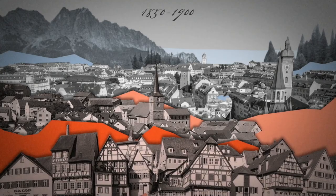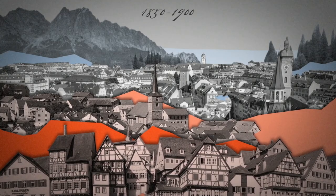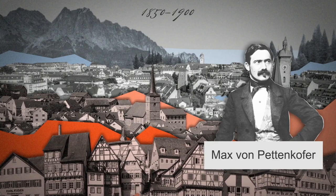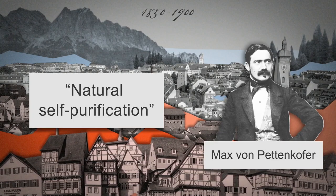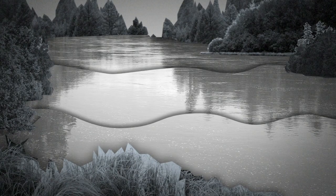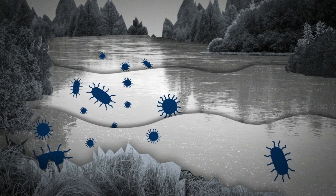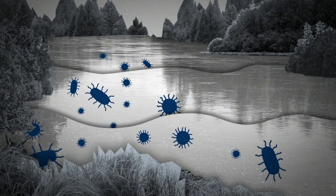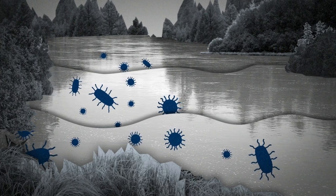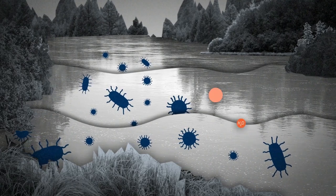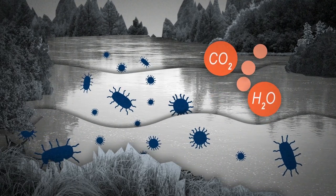In the second half of the 19th century, the German chemical engineer and hygiene pioneer Max von Pettenkofer formulated the concept of natural self-purification. With this term, he referred to the biological degradation of contaminants and pollutants in water bodies using the metabolic properties of bacteria and other microorganisms. In simple terms, microorganisms use contaminants as food and thus convert them into water, carbon dioxide and nitrogen.